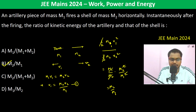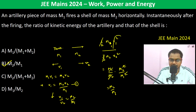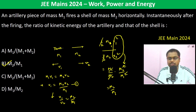We can see clearly that V1 by V2 is equal to M2 by M1, which we have substituted here. So V1² by V2² becomes M2² by M1², giving us the final answer M2 by M1.